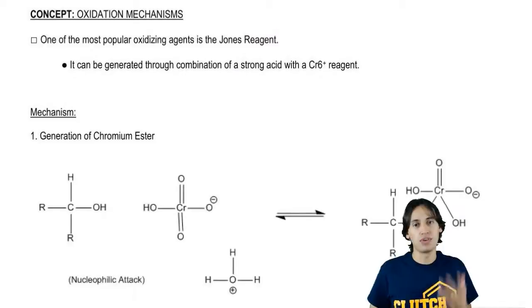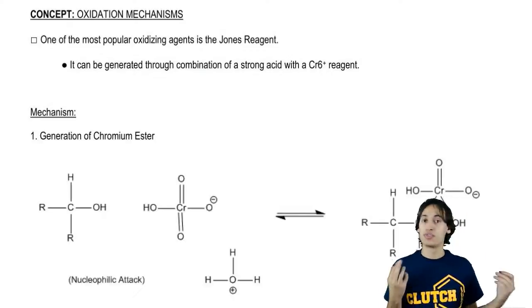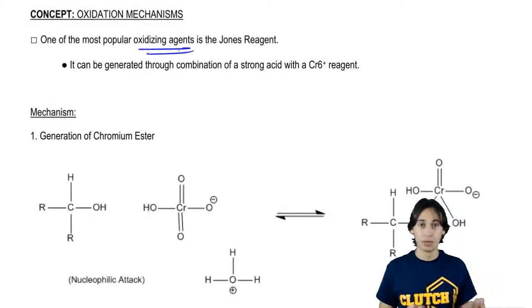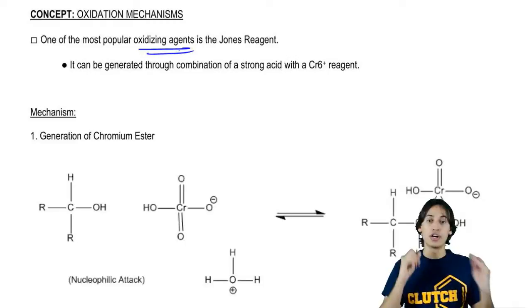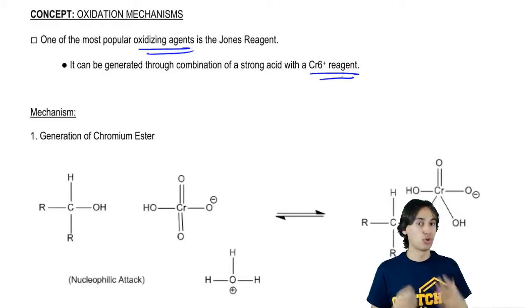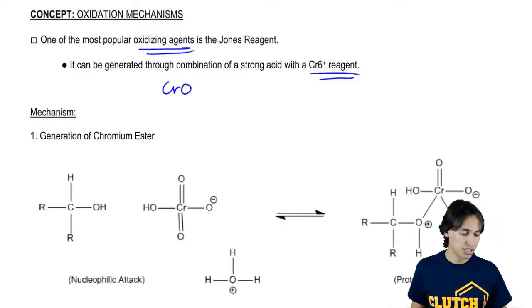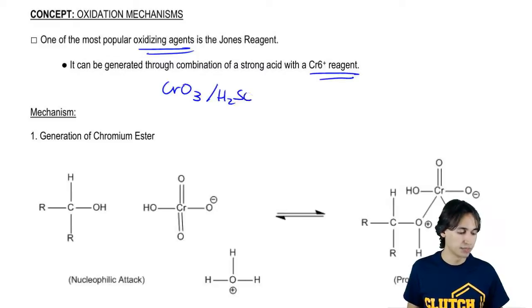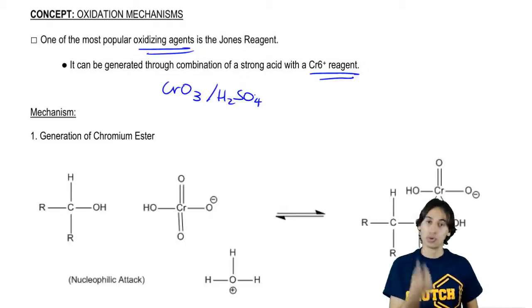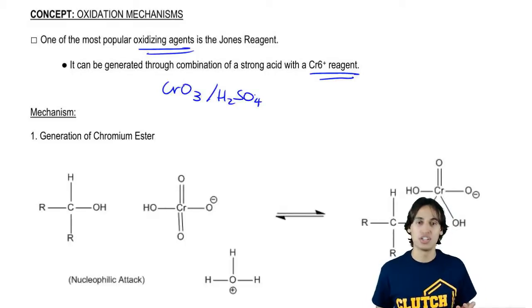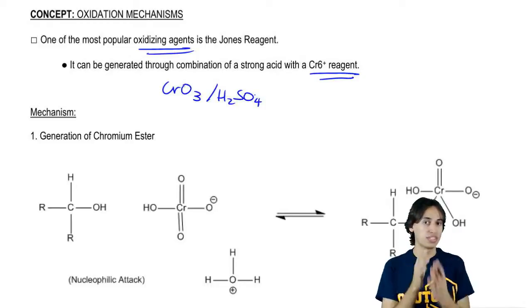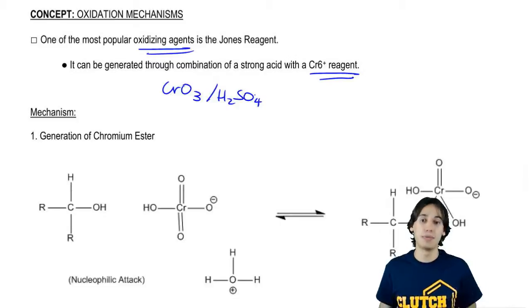We're going to talk about the Jones reagent, which is one of the chromium 6+ reagents. It's one of the most popular oxidizing agents - that's why you hear about it. The way it's generated is through a strong acid with a Cr6+ reagent. Usually that's CrO3 and H2SO4. H2SO4 is your strong acid, CrO3 is your source of chromium. But many of the other chromium reagents that have potassium or sodium in them actually wind up eventually breaking down into Jones reagent anyway.